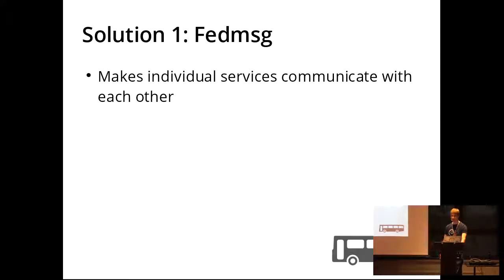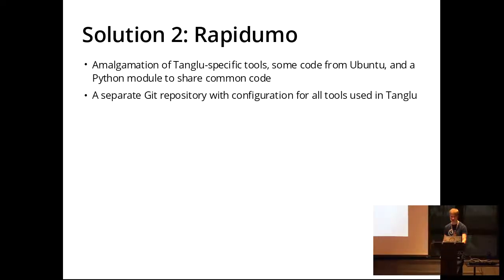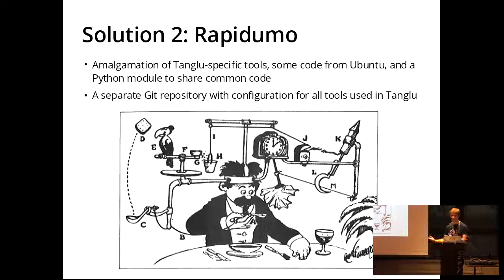Running out of time, I'll go through a few solutions we tried to mitigate this. FedMessage is a system to make parts communicate with each other, developed by Fedora, but it didn't solve the problem completely because we still had the configuration management problem. We also had Rapidumo, which is a large collection of Python scripts we developed in order to glue the different parts of the infrastructure together — which kind of worked, but wasn't great. So we had something working in the end, based on these things and also a Git repository with all the configuration files, but it wasn't awesome.